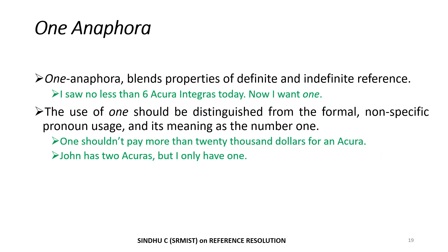One anaphora shares properties of both definite and indefinite reference. For example: 'I saw no less than six Acura Integras today. Now I want one.' The use of 'one' can be roughly paraphrased as 'one of them,' in which 'them' refers to a plural referent and 'one' selects a member from that set. The use of 'one' should be distinguished from the formal non-specific pronoun usage and its meaning as the number one. For example: 'One shouldn't pay more than $20,000 for an Acura' — here 'one' is a pronoun. Whereas in 'John has two Acuras, but I only have one' — 'one' refers to the number one.